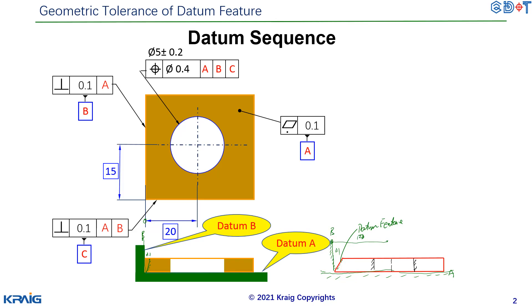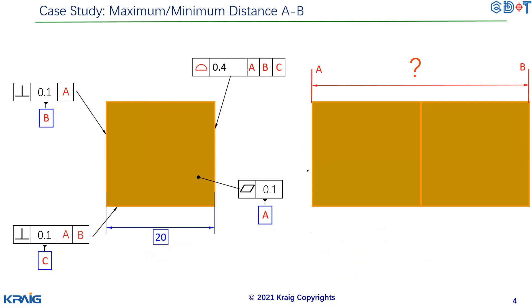For datum A, the form should be perfect. For datum B, the orientation should be perfect to A. For datum C, the orientation should be perfect to datum A and B. All right. Let's have an application of this one.